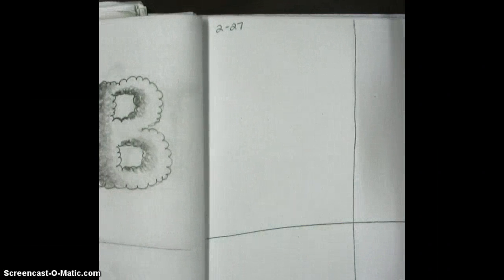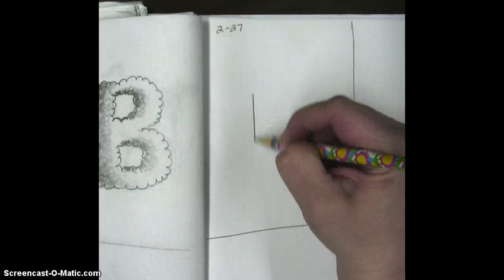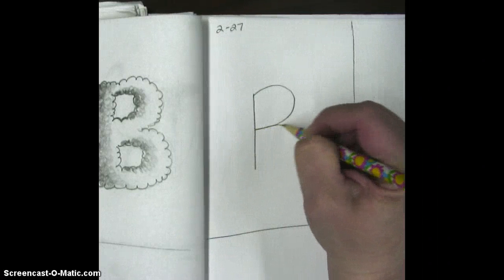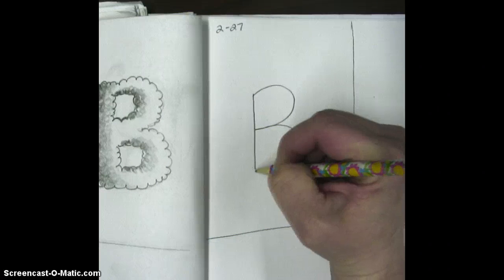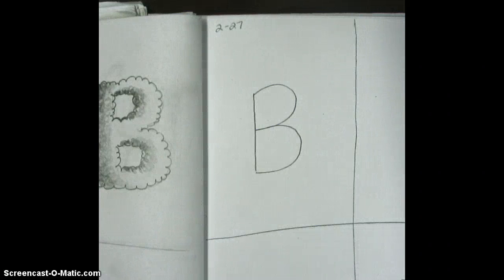So what we're going to do is start with a very simple stick letter B. Make sure it connects just like that. Basic B. Very easy.